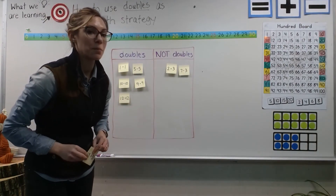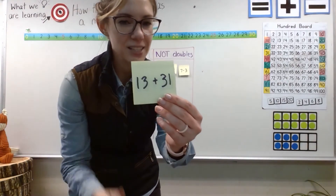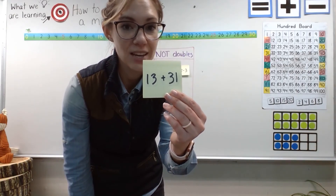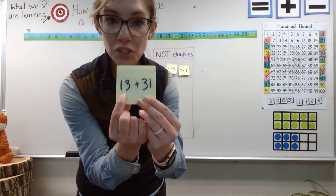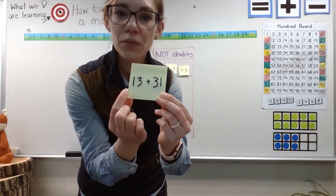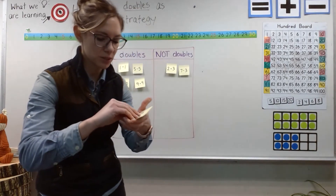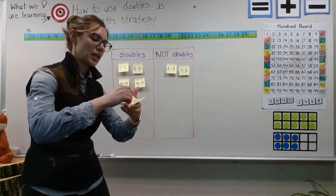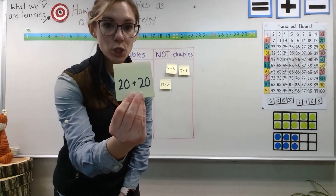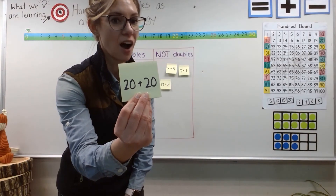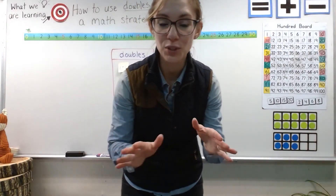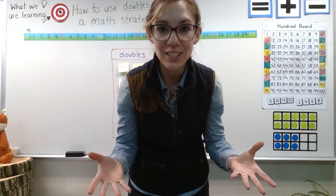Now, this one might be trickier. Is this a doubles fact or not a doubles fact? Look really closely. We have 13 plus — not 13 — this is 13 plus 31. Thirteen plus 31 — that's not a doubles fact, because 13 is different than 31. They're two different numbers. All right — 20 plus 20. You're right, it is a doubles fact. That was a good one. Looks like you guys are getting really good with your doubles. Now I want you to practice doing them on your own.